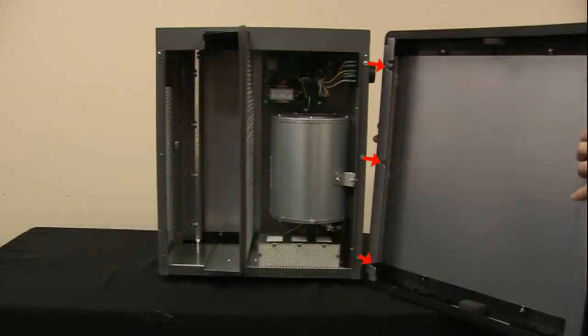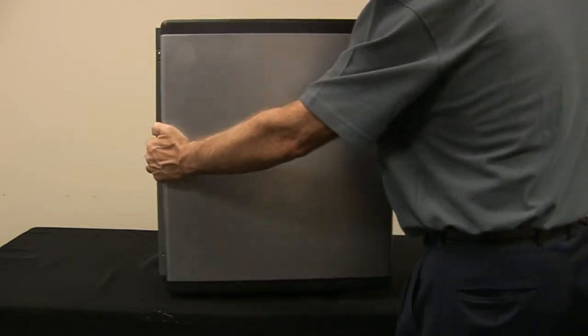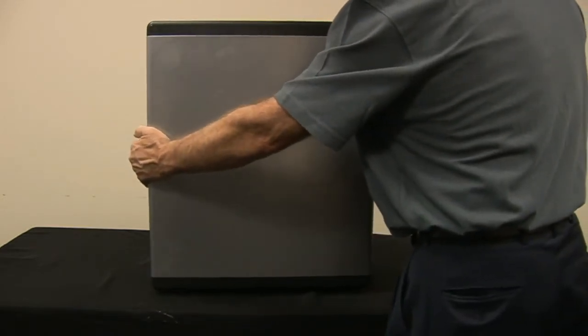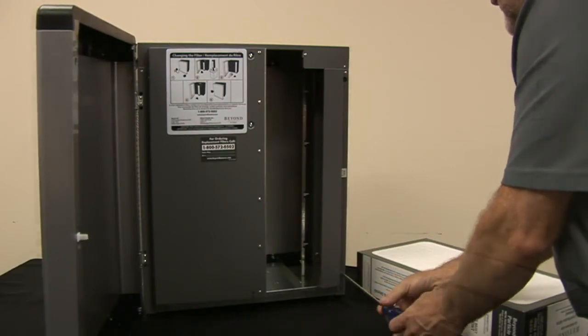Stand the unit upright. Align the fixed door slots with the large washers on the unit. Rotate the door and then slide it to the left under the washers as shown. Secure the door in place with the three screws removed earlier.